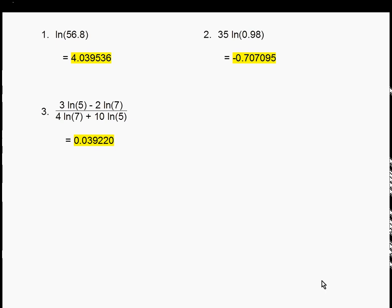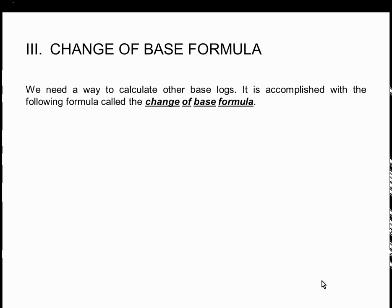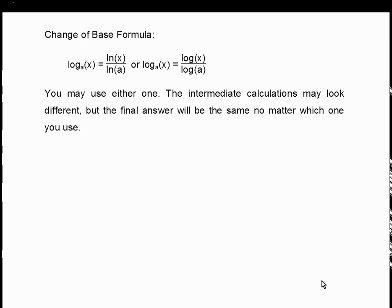Your calculator can only do common logs and natural logs. To calculate something like log base 2 of 5, we use the change of base formula. The formula states: log base a of x = ln(x) / ln(a), or equivalently log(x) / log(a). You may use either one — intermediate calculations may look different, but the final answer will be the same. Let your calculator do all the work; there's no need to write down intermediate steps.